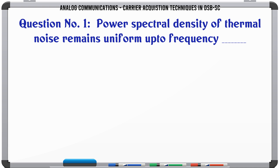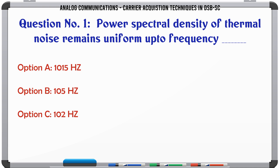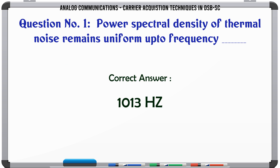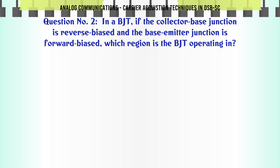Power spectral density of thermal noise remains uniform up to frequency: A. 10¹⁵ Hz. B. 10⁵ Hz. C. 10² Hz. D. 10¹³ Hz. The correct answer is 10¹³ Hz.